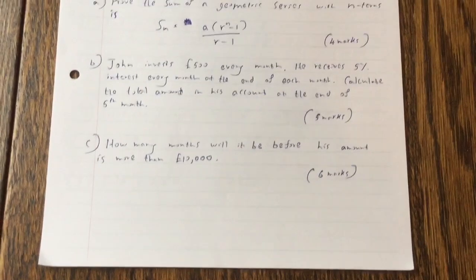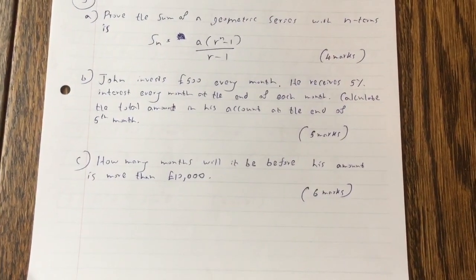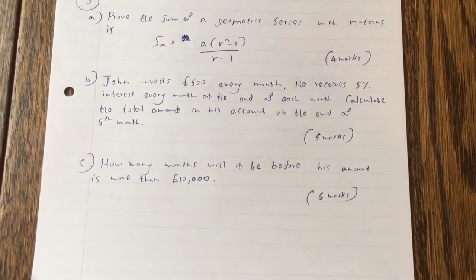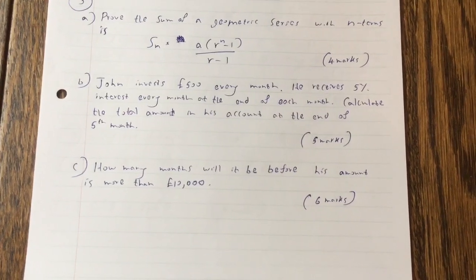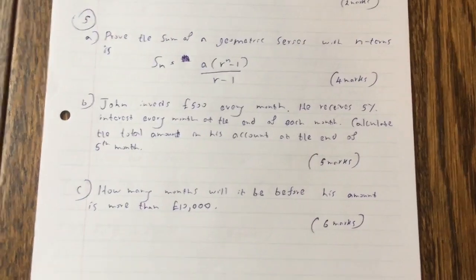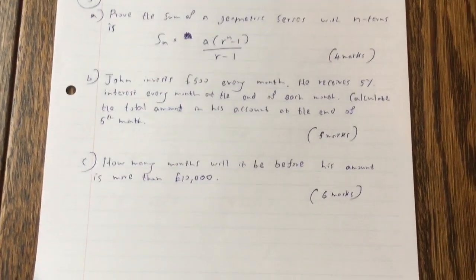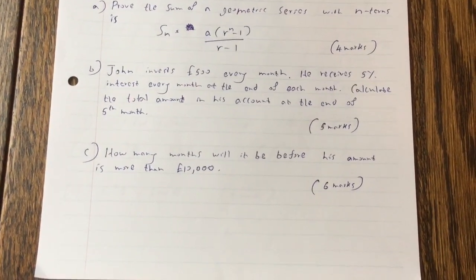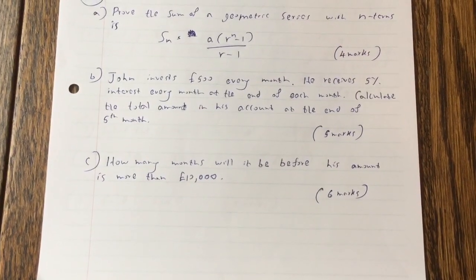Question B: John invests 500 pounds every month. He receives 5% interest every month at the end of each month. Calculate the total amount in his account at the end of 5th month. How many months will it be before his amount is more than £10,000?